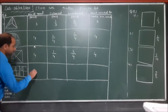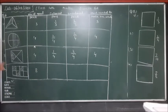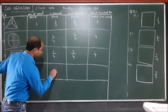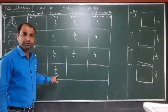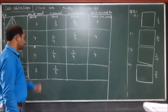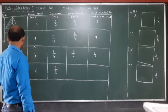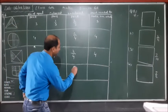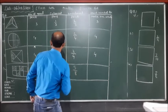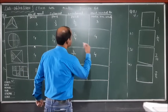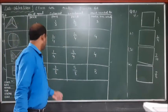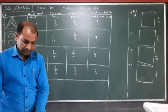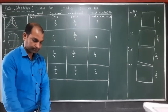For the shape with eight parts: one, two, three parts are colored out of eight, so we write three upon eight. The uncolored parts are one, two, three, four, five — five parts are uncolored, so five upon eight. Eight parts are needed to make a whole. This completes the first question.